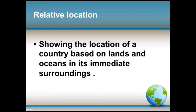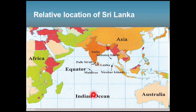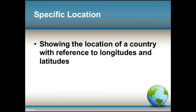Showing the location of a country based on lands and oceans in its immediate surroundings is called relative location. The island of Sri Lanka is located in the Indian Ocean, closer to the Indian subcontinent. The Asian continent is located north of Sri Lanka, the Indian Ocean is located south, the African continent is located west, and the South East Asian countries are located east of Sri Lanka.